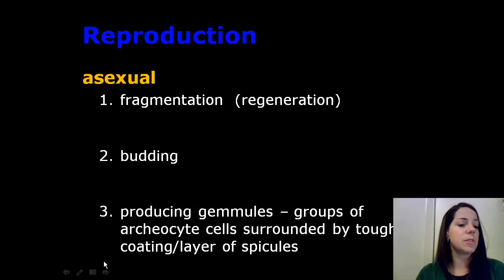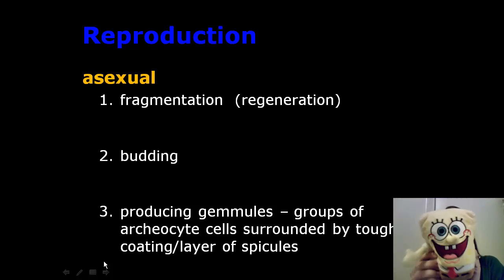The first method is fragmentation. That refers to a sponge's amazing ability to regenerate, which means to regrow a missing part. A very small piece of the sponge can regenerate into a complete sponge. Ah! I'm missing my arm! The sponge regrows into a new SpongeBob SquarePants.